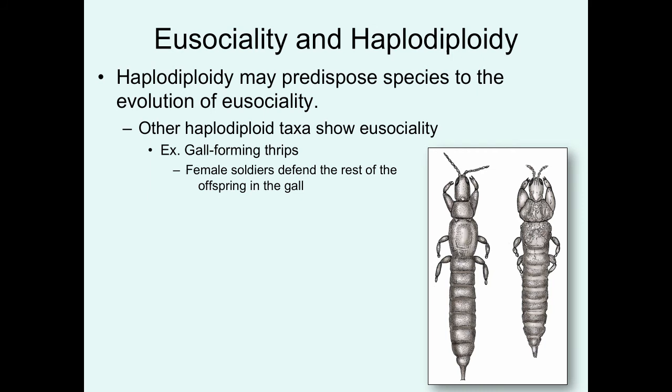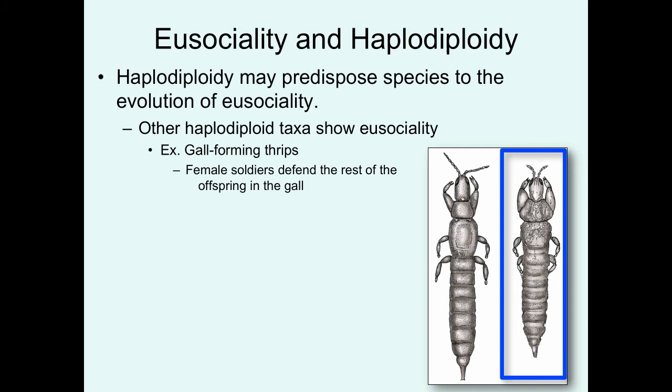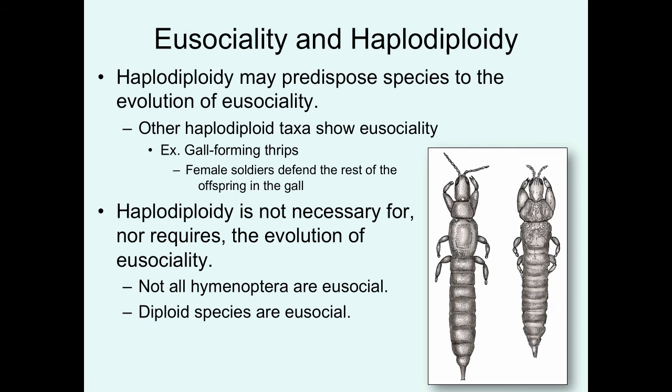Other evidence that haplodiploidy plays a role is that other lineages of insects are also haplodiploid. For example, all gall-forming thrips (Thysanoptera) are also haplodiploid and they are eusocial, where female soldiers defend the rest of the offspring in the gall. The sterile soldier caste protects the gall allowing production of more reproductives, and by doing so, that individual is producing more copies of their genes through this 75% relatedness — so foregoing direct reproduction is not much of a cost.